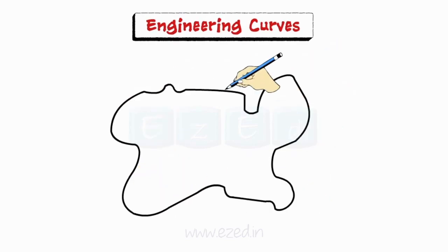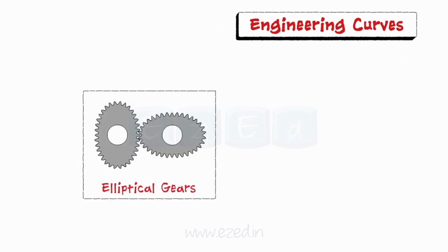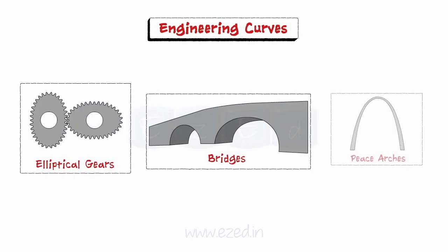First, let us see about engineering curves. Curves are basically non-circular. These curves are used in drafting machine components, elliptical gears, civil structures like bridges, arches, and in many other fields of engineering.